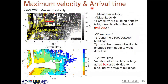Here are the maximum velocity and arrival time results. For maximum velocity, we can see small magnitudes where building density is high — for example, in the north of the port area shown by the red box. Flow direction around streets between buildings can also be seen. In the southern area, direction changes from south to west. About arrival time, variation is large in the red box area, which is due to blocking by the group of buildings. The group of buildings decreases velocity, so arrival time increases.